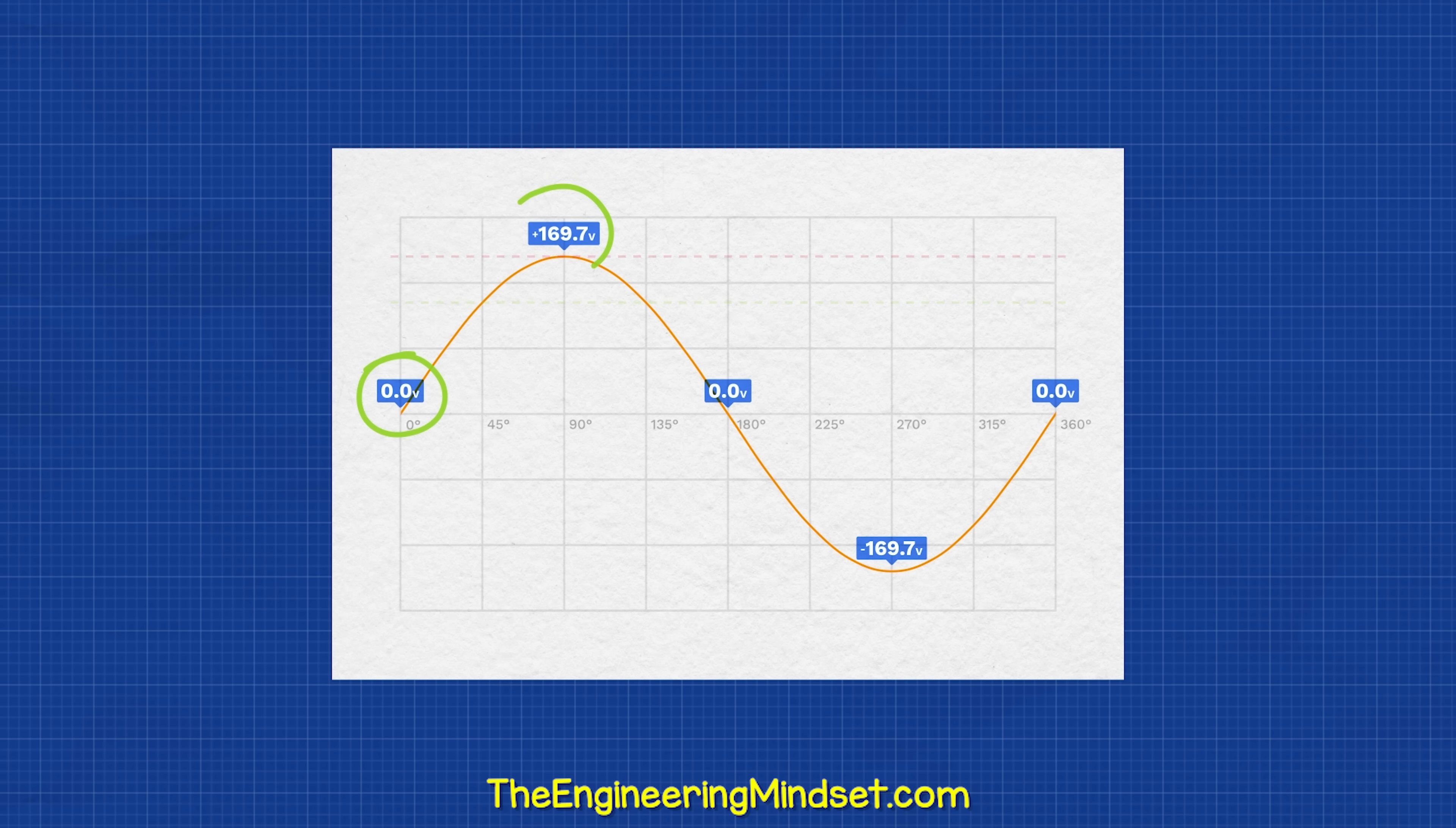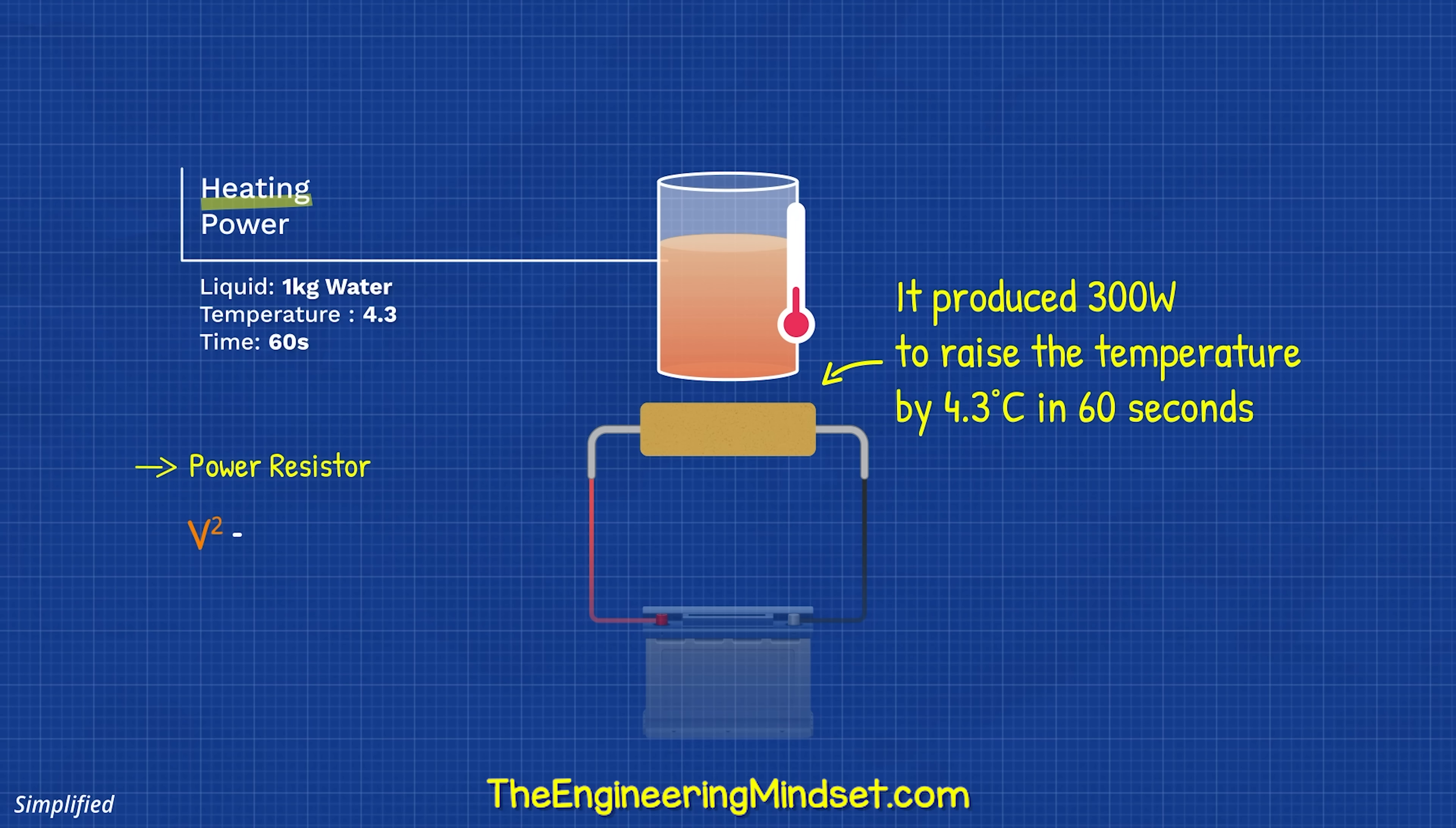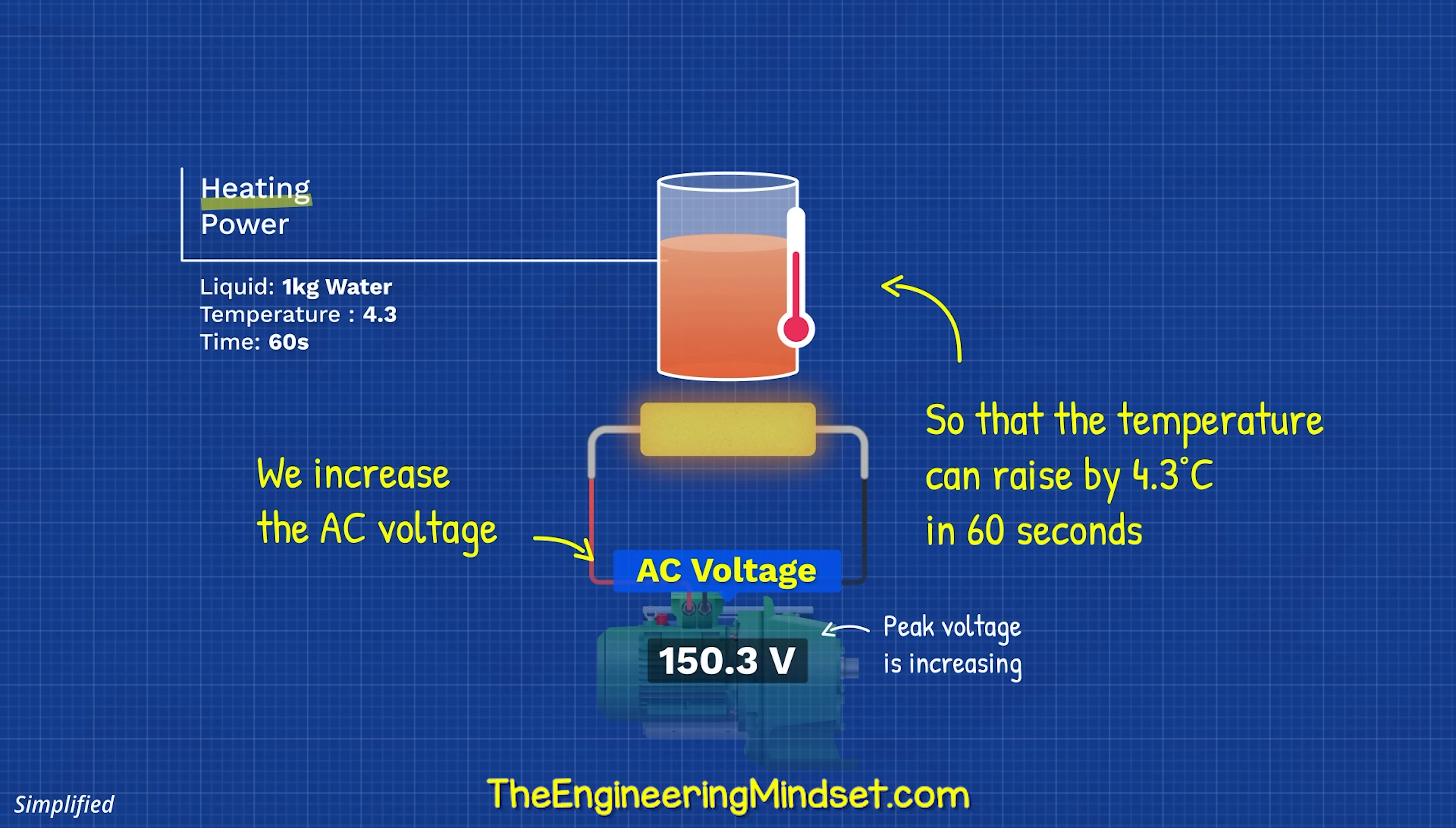The sine wave has equal positive and negative values for voltage and current. If we added these all together, we get zero. So we need a different way to calculate this. Someone realized that if we connected a DC voltage to a resistor, it produced heat and they could calculate this power. Then they applied an AC voltage and they kept increasing the peak voltage until it produced the same amount of heat.